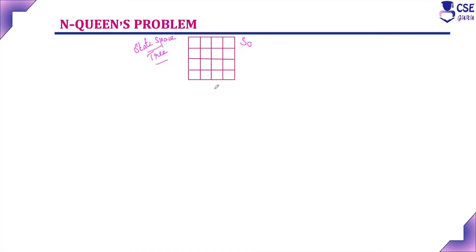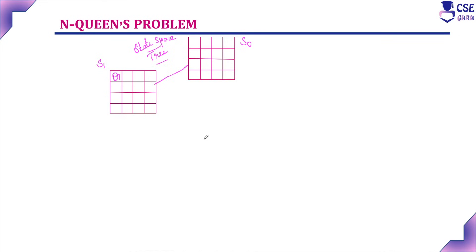This is the initial state for the N-Queens problem, considered as state S0. From this initial state, we will construct the first, second, and third level components. With this initial state, we will first place the first queen, and this state will be considered S1. The first possibility is to place the first queen at position (1,1).